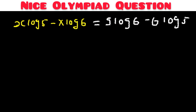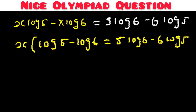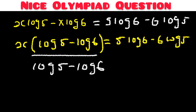We can see x appears in both terms on the left, so we factor it out. This gives us: x times (log 5 minus log 6) equals 5 log 6 minus 6 log 5. We then divide both sides by (log 5 minus log 6).